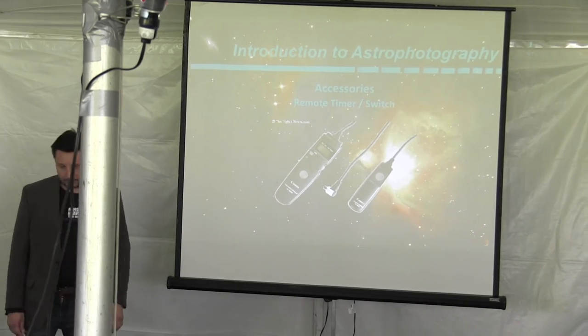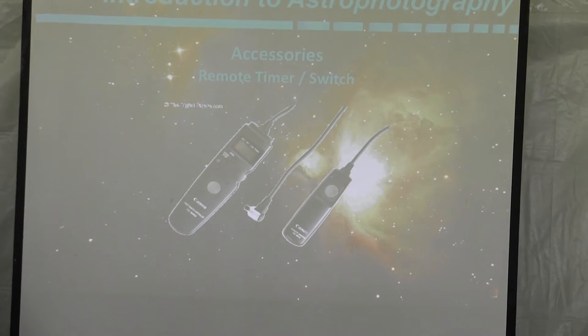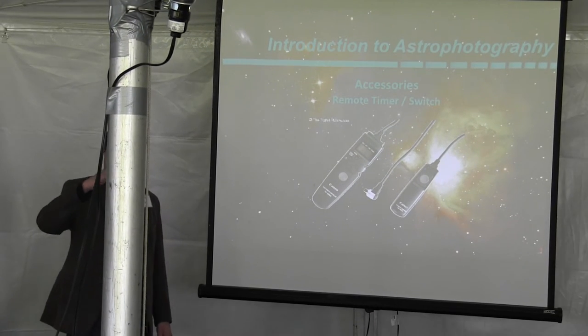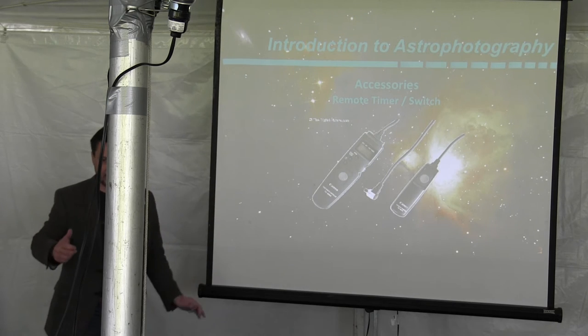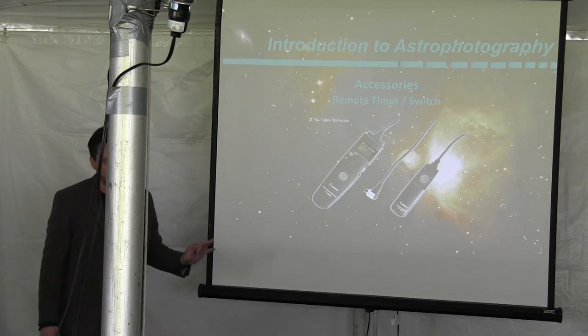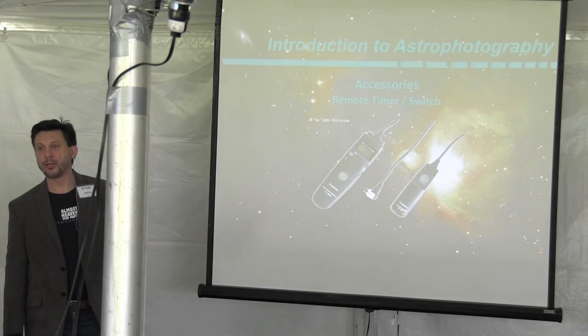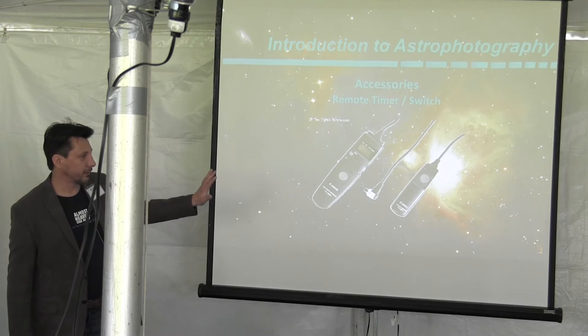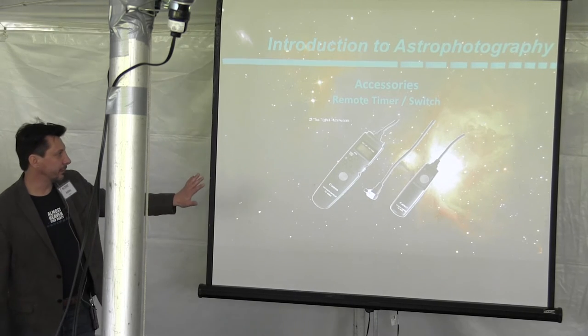The remote timer, the remote switch. This comes in handy for a variety of reasons. First, when you're taking a picture with the camera, if you're using your finger, you just made your telescope go like this, and your picture's a big smear. So you want a remote switch where you're not touching it. What these also let you do is if I want to take 20 pictures of something, I can set this up to take 20 pictures in succession for an exposure time of seven minutes.